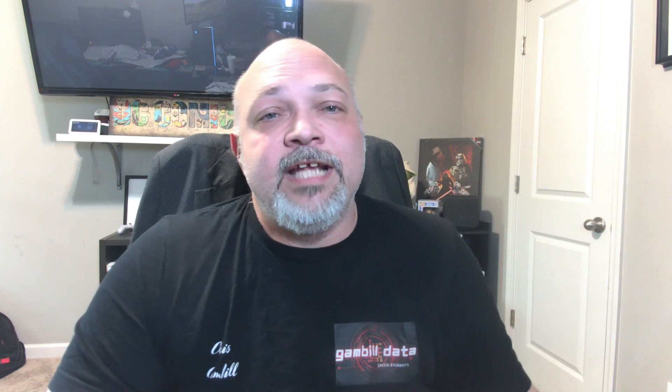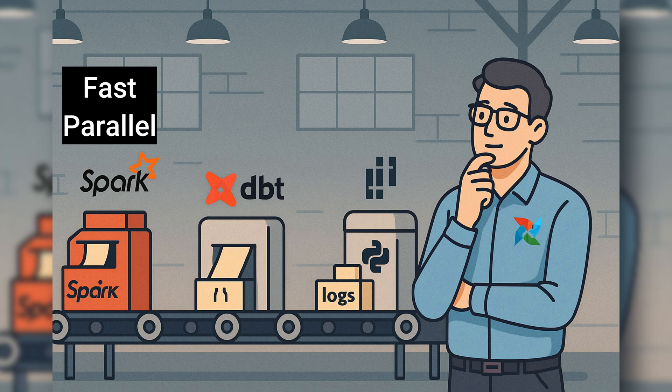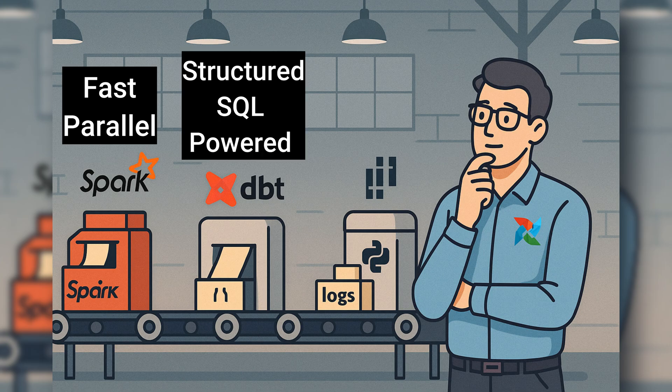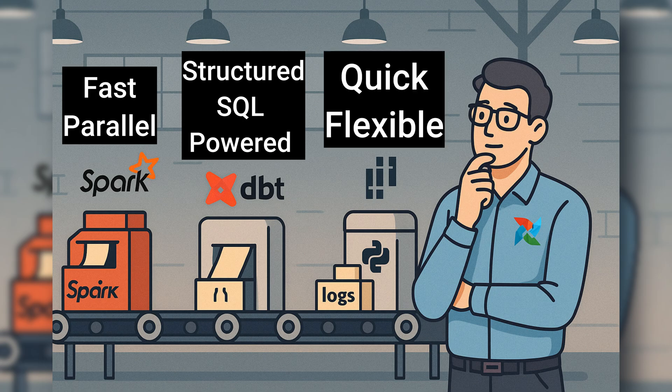Let's picture a data factory. First, you've got Apache Spark — that is your heavy-duty processor, blazing fast and massively parallel, which means you can run multiple things at the same time. Then we have dbt, which takes that raw data and applies structured transformations using SQL. And we can't forget about pandas with Python — it is quick, flexible, and perfect for more detailed work in notebooks or ad hoc tasks.